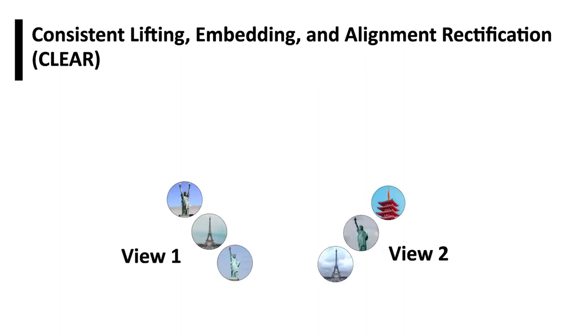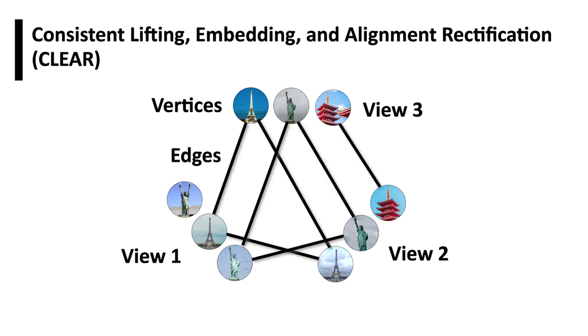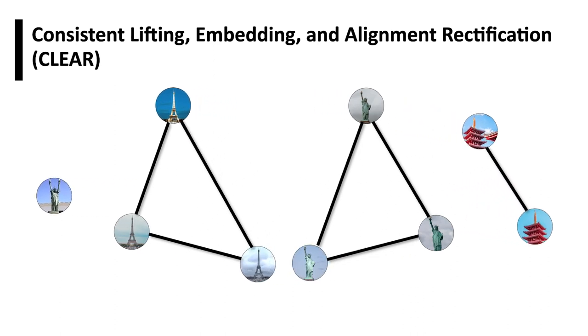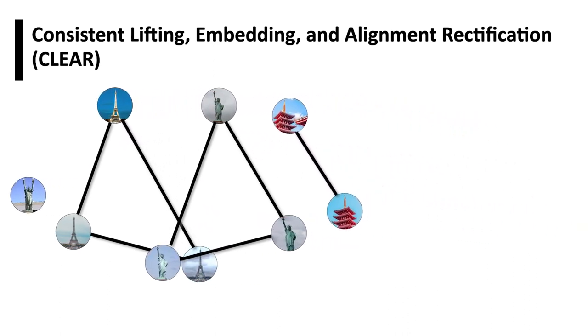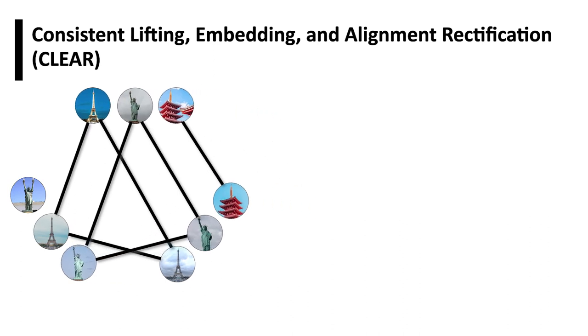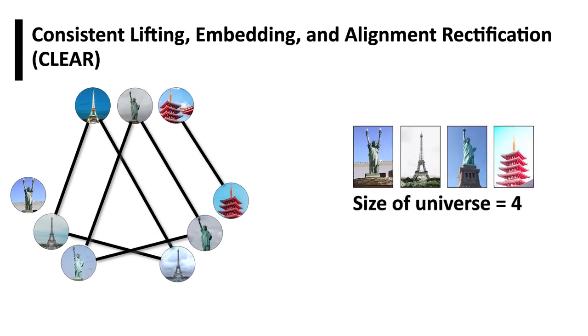CLEAR represents the problem as a graph, where vertices represent items and edges represent associations. When associations are correct, this graph consists of disjoint, fully connected subgraphs. CLEAR leverages this insight to obtain an accurate estimate for the size of the universe, and add or remove edges of a noisy association graph to make it cycle consistent.